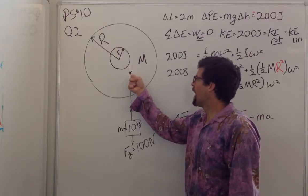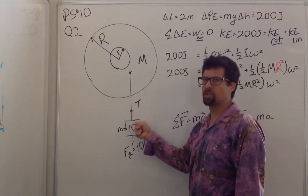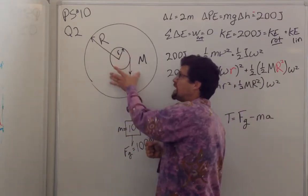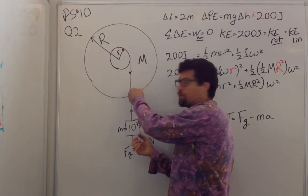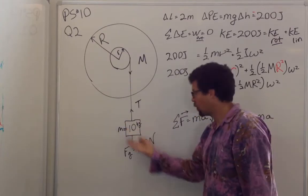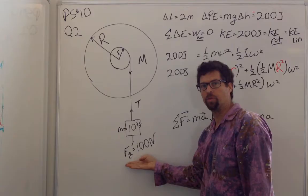We solved this problem where I pulled with 100 newtons on a string around this same wheel. This is different because you're not pulling with 100 newtons. You have a mass with a gravitational force of 100 newtons on it.